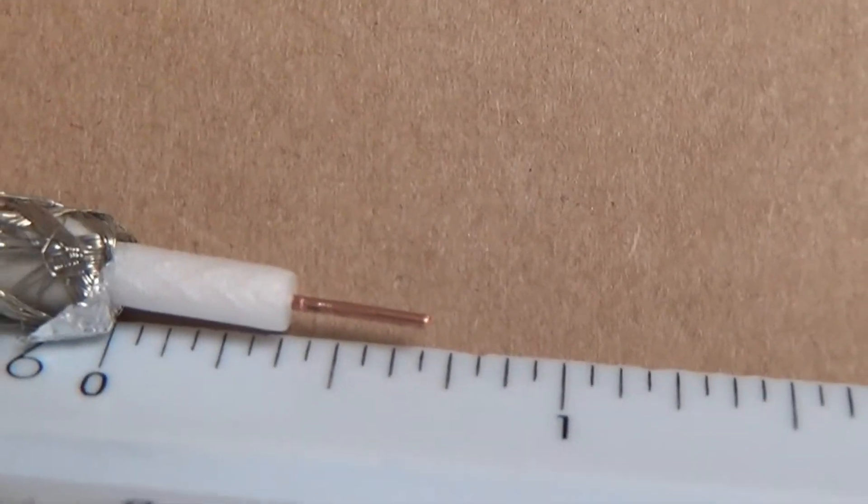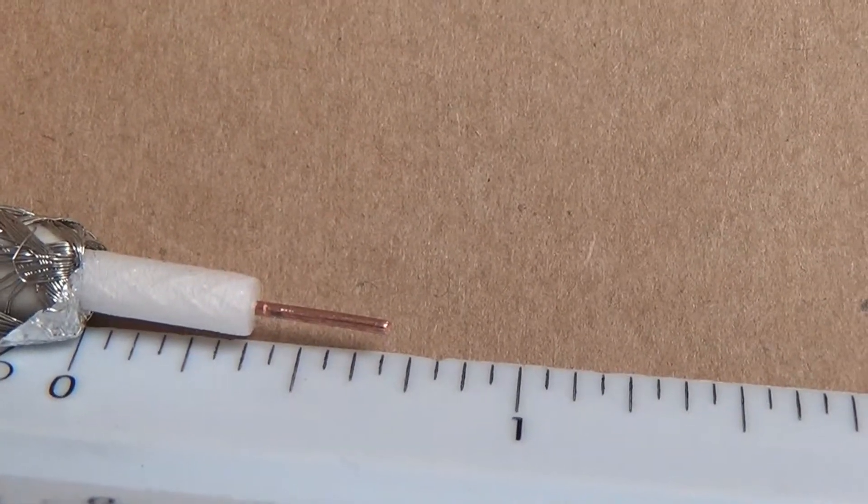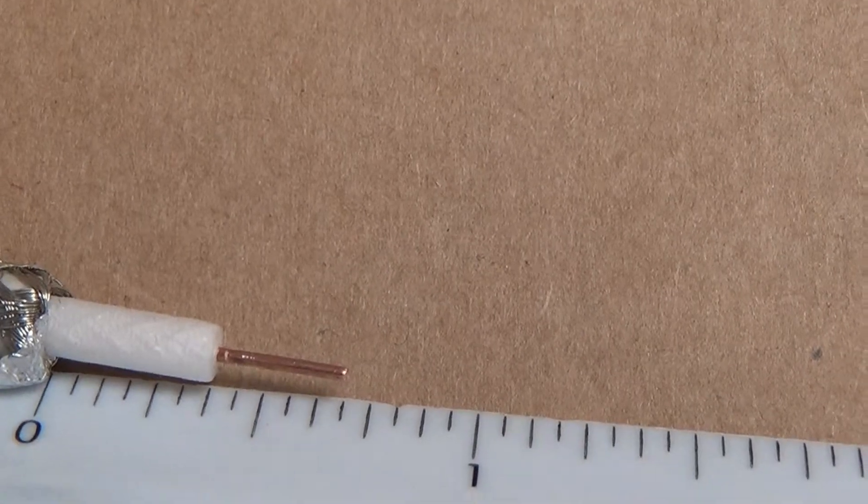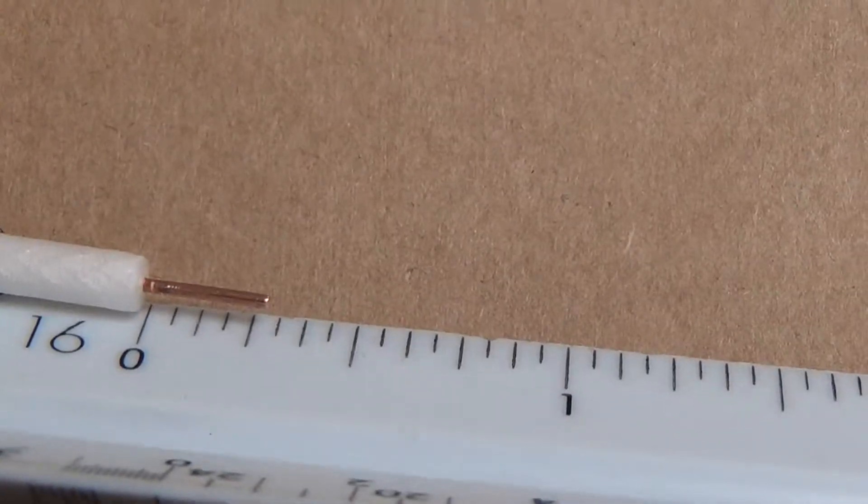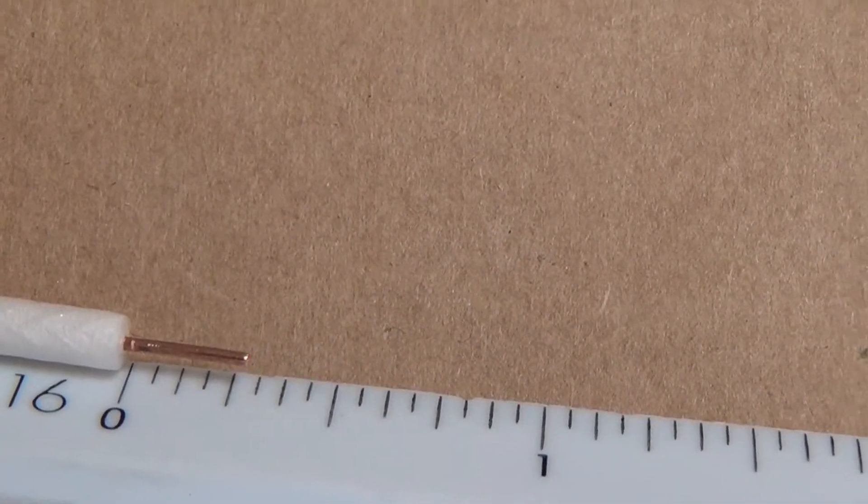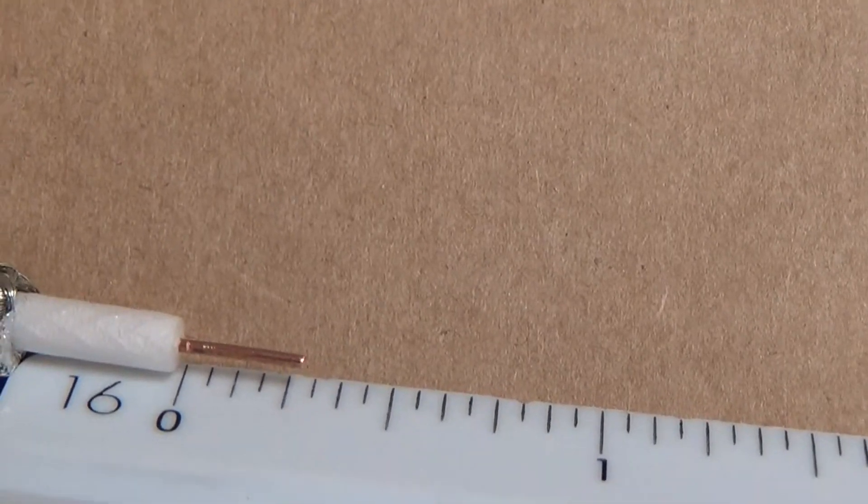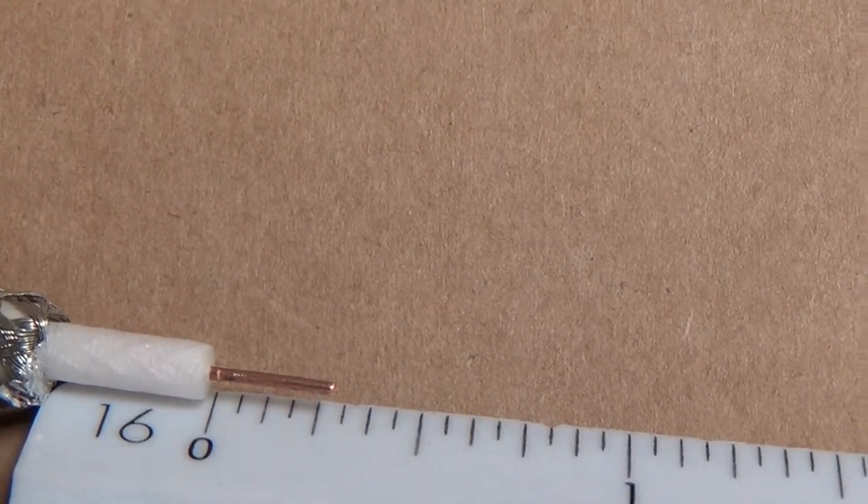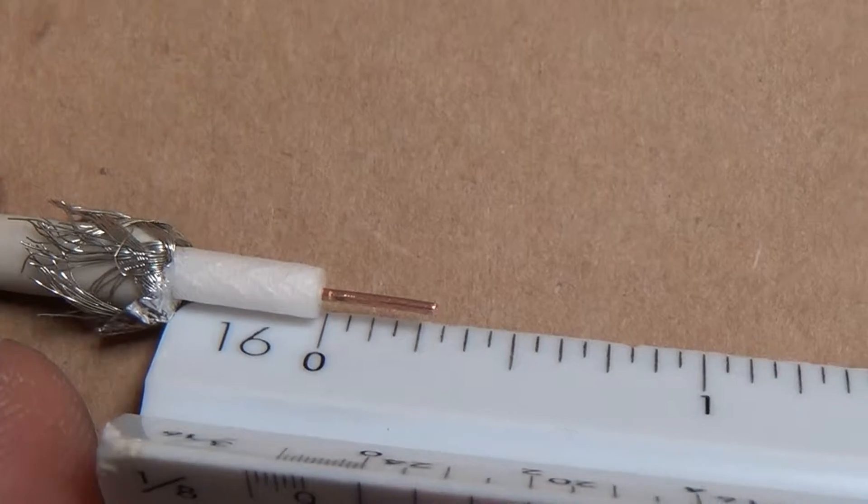Looks like the dielectric is three-eighths starting at the zero mark, and then the center conductor on this one starting at the zero mark. You can actually make it a quarter. You don't have, it's a hair over a quarter, but it'd be fine at a quarter. I'm actually just a hair long on my center conductor, so a quarter inch would be fine.